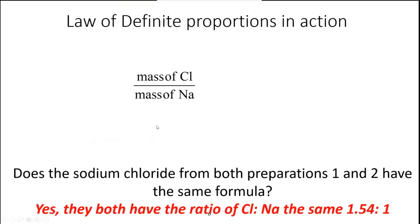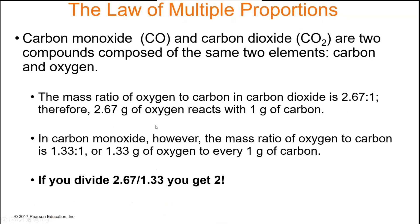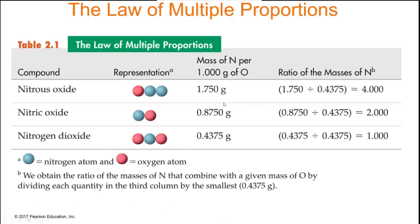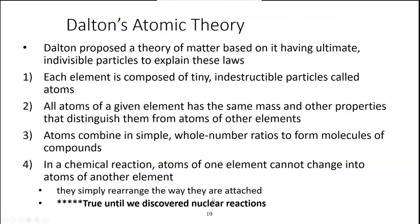The law of multiple proportions states that if you have two elements that can form different compounds — such as nitrogen and oxygen, which can form multiple compounds — the ratios between nitrogen and oxygen, when divided by each other, yield whole numbers. Elements arrange themselves in whole number ratios in different chemical compounds, even when the same elements appear in different compounds.